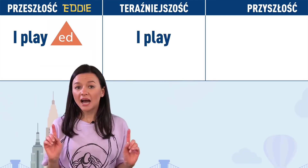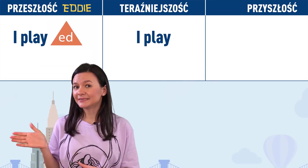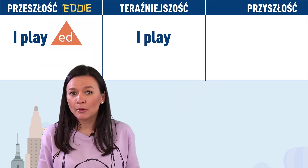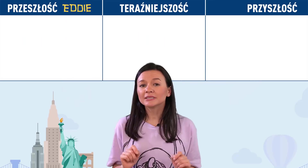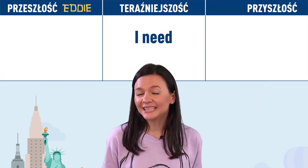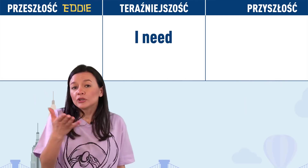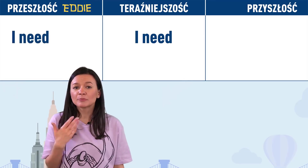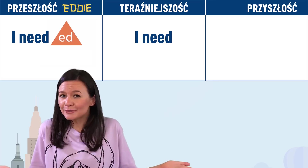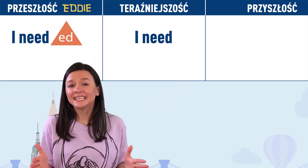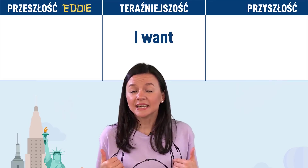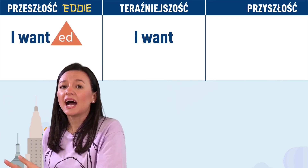I played. I played oznacza ja grałem/grałam. I to już. Spróbujmy teraz z innym słowem, które już znasz. Na przykład: I need – ja potrzebuję. To jak powiesz ja potrzebowałem? Tak, dobrze – dodajesz edka. I już: I needed. Ja chcę – I want. Ja chciałem – I wanted.